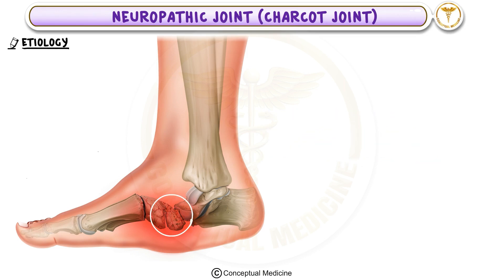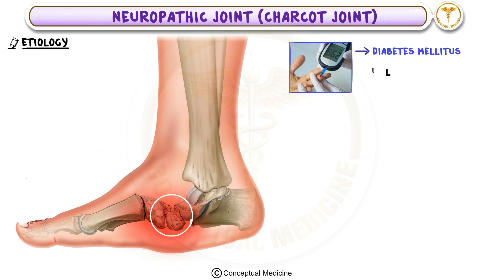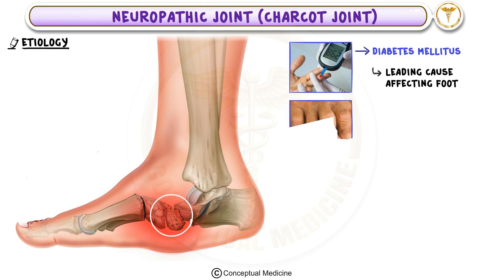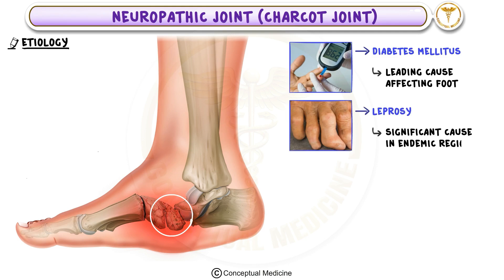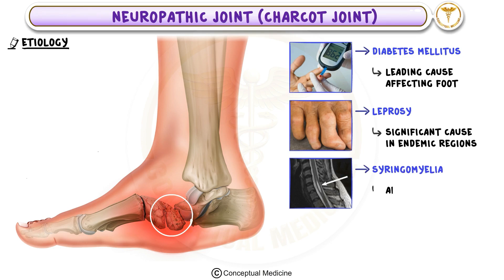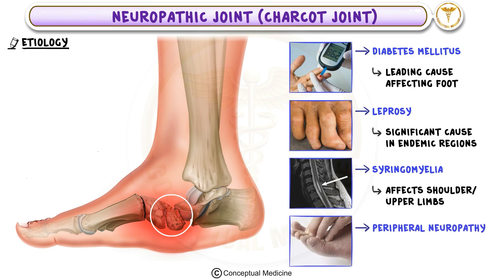The most common causes of Charcot Joint include: 1. Diabetes mellitus — the leading cause, especially affecting the foot. 2. Leprosy — another significant cause in endemic regions. 3. Syringomyelia, which often affects the shoulder or upper limbs. 4. Any form of peripheral neuropathy, regardless of its etiology.